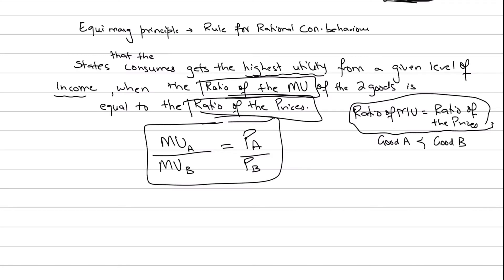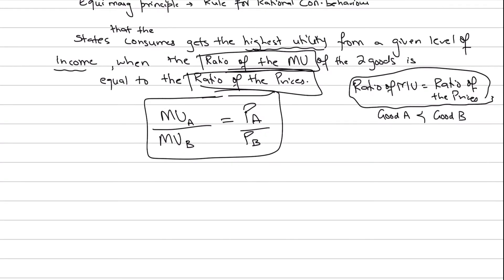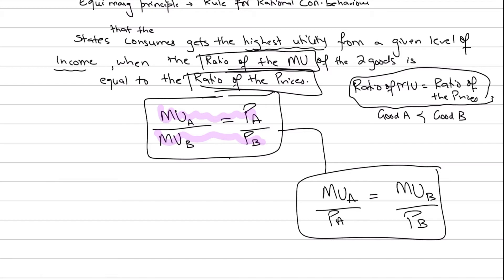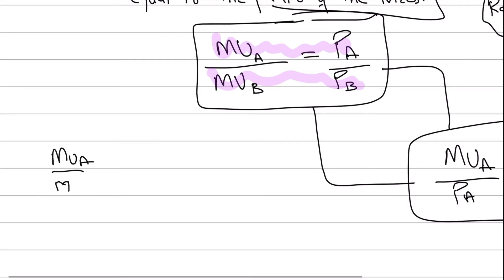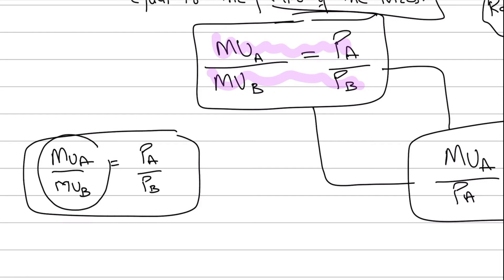Using this principle, we can see how a consumer with his given income can allocate resources to maximize his consumer surplus and total utility. In some books, the equi-marginal principle formula is also written as: marginal utility of A divided by price of A equals marginal utility of B divided by price of B. Both formulas are exactly the same thing.